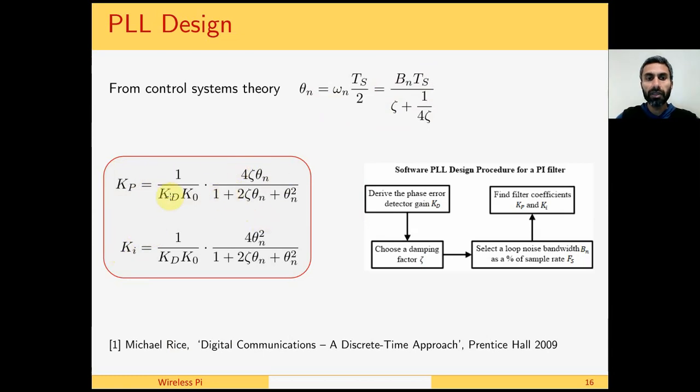Now they might look complicated, but if you have a look at these terms, then Kd is given by the phase error detector. K0 comes from the NCO. We have already seen those in the last slide. And then zeta is something we have chosen. As I said before, 1 over square root 2 or 1, these are reasonable values. Theta_N comes from here, which is a function of BN, loop noise bandwidth and zeta. So when you plug in these values, we get Kp and Ki. In some cases, these can be simplified as we will see later.